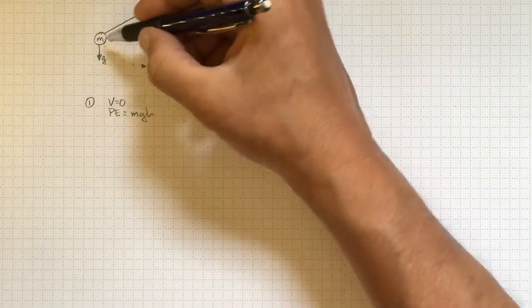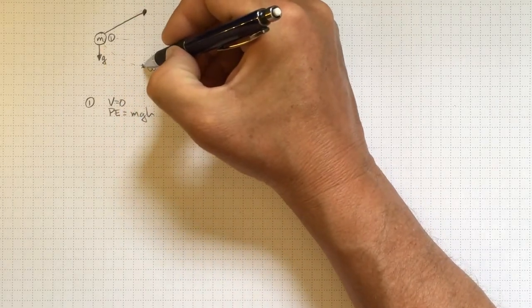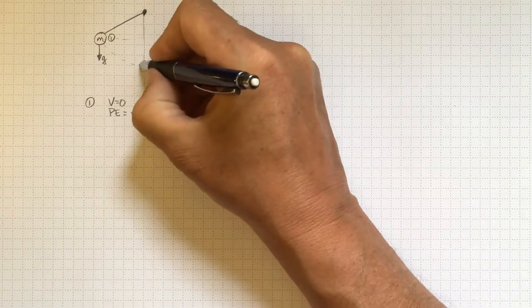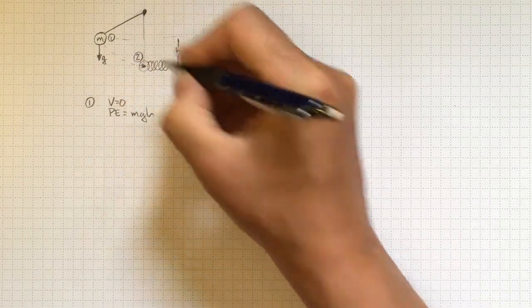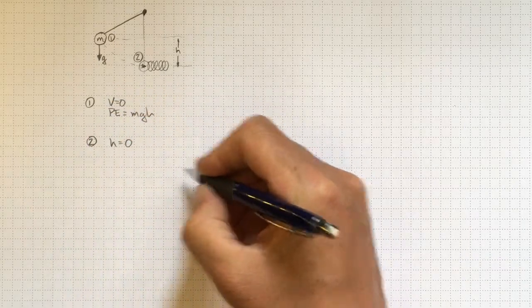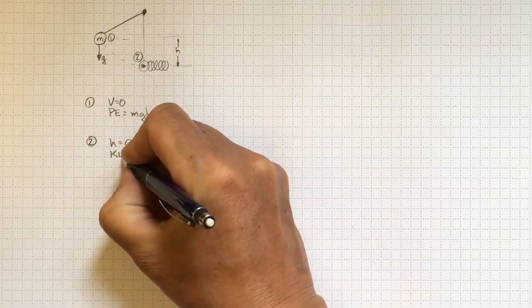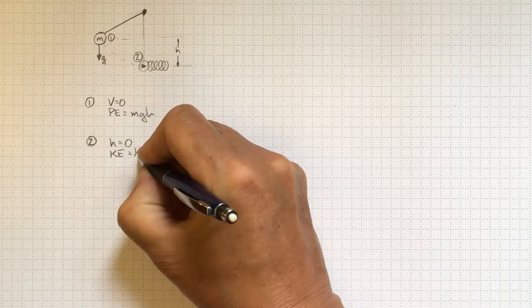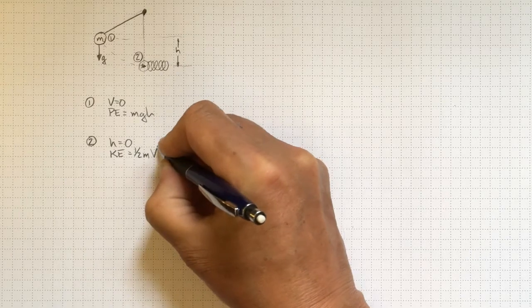If we let go of it and let it swing down here to the lowest spot it can get to on that pendulum, then when we get down here to location two, we are now down at a point where h is equal to zero. And the kinetic energy of the pendulum bob is one half mv squared.